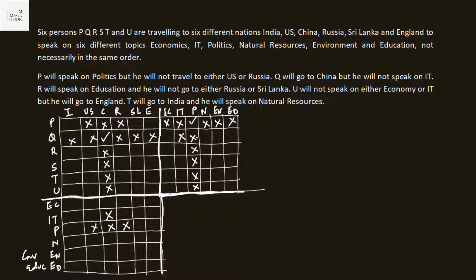R will speak on education. The Chinese person is not speaking on education. R will not go to either Russia or Sri Lanka, so R is not going to Russia and not going to Sri Lanka. Russian and Sri Lankan persons are not speaking on education. U will not speak on economics or IT, but U will go to England.